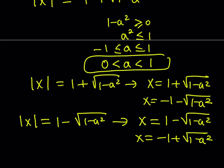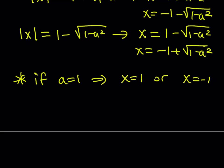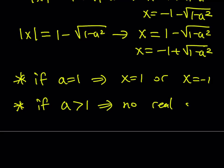If a is equal to one, we get numerical values: x equals one or x equals negative one, which follows from the four solutions above. If a is greater than one, the expression inside the radical is negative, so its square root is undefined and we get no real solutions.